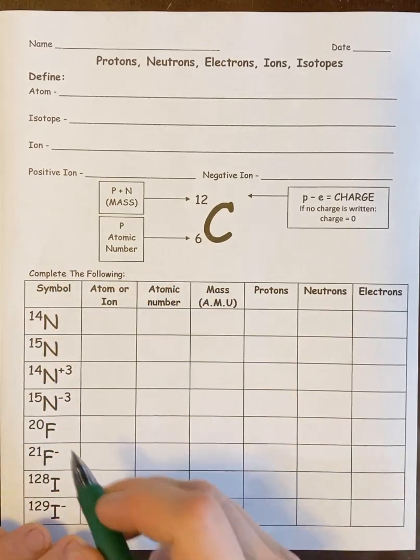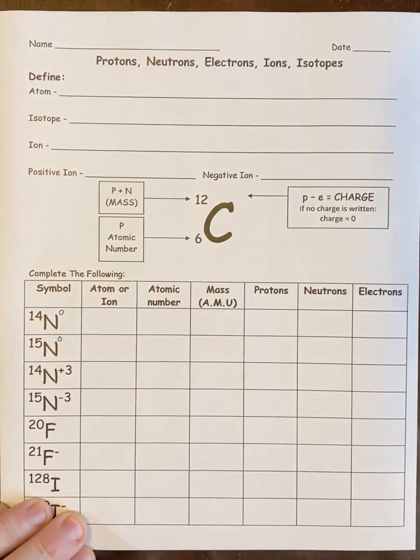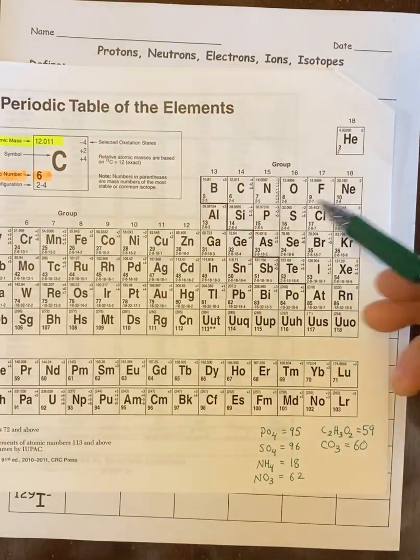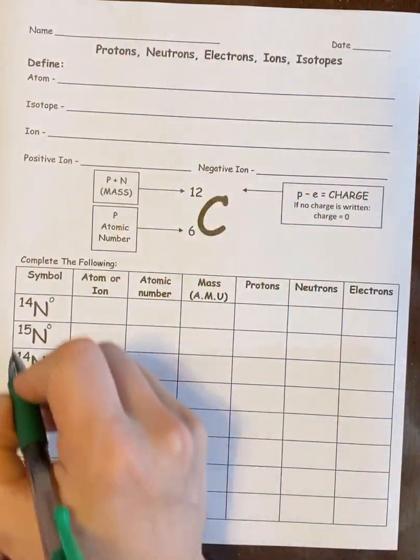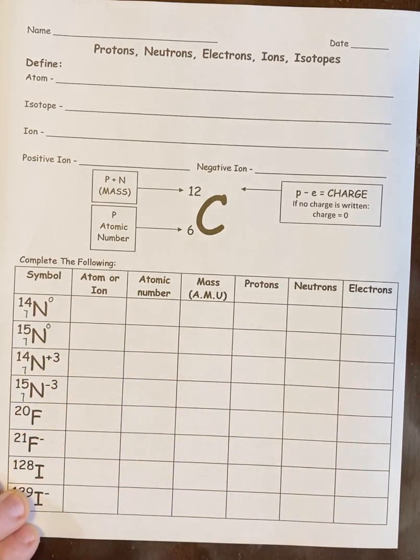If you look at these first couple, they're all nitrogen. These first two don't have a charge, so I'm going to put zero in. And since I know they're all nitrogen, and I look nitrogen up on my periodic table, the atomic number is 7, I can put a 7 in the bottom right-hand corner.